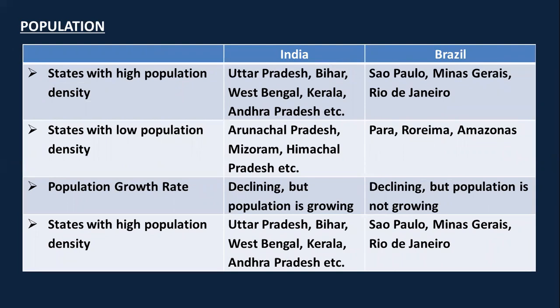States with high population density in India include Uttar Pradesh, Bihar, West Bengal, and Kerala. Low population density is found in Arunachal Pradesh, Mizoram, and Himachal Pradesh, because these are remote, inaccessible mountainous regions with heavy rainfall and extreme climatic conditions.